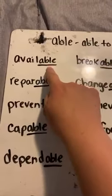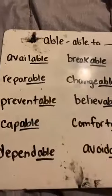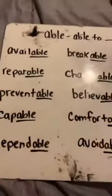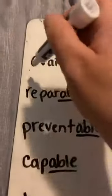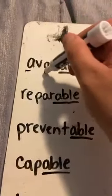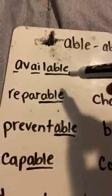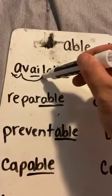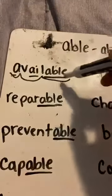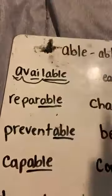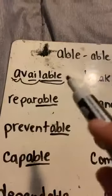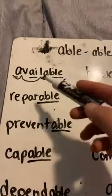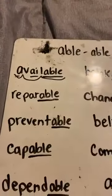So look right here. This is a tricky word. Let's use our strategy that we know to break words apart. First, I'm going to look at my vowels — where's my vowel? There's one, and there's one. A-V-A-L-A-BLE... AVAILABLE. We say AVAILABLE. And AVAILABLE means that you're able to be available.